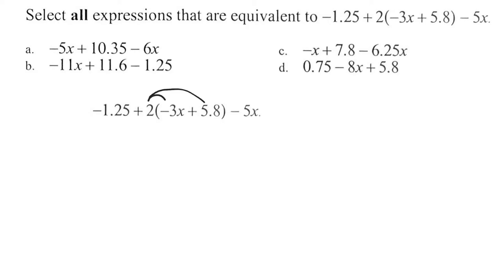2 times negative 3 is negative 6, and don't forget the x. 2 times 5.8, that's 11.6 I think. And I'll just write down the minus 1.25 and the minus 5x. Now I can combine my like terms. Negative 5x and negative 6x, they're the same sign so you have to add them up. That's negative 11x.